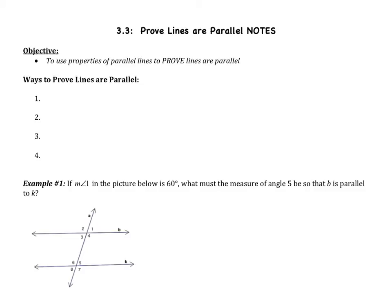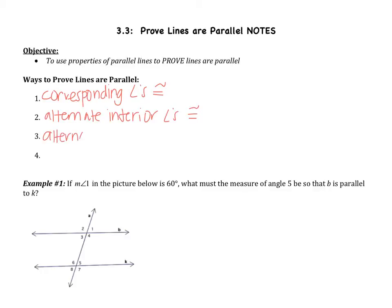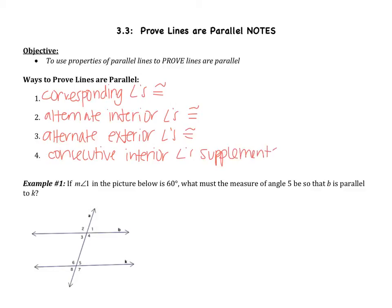There are four main ways to prove that the lines are parallel. The first one is to show that at least one pair of corresponding angles are congruent. You can also show that the alternate interior angles are congruent, that the alternate exterior angles are congruent, or that the consecutive interior angles are supplementary. If you can show any of these four, this will prove that the lines are parallel.